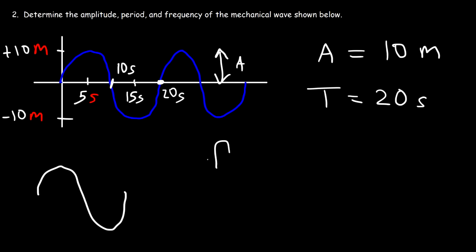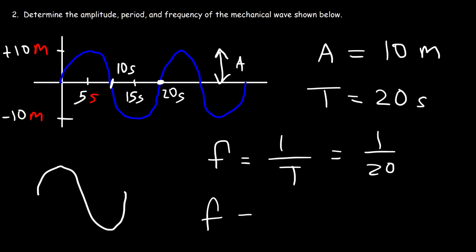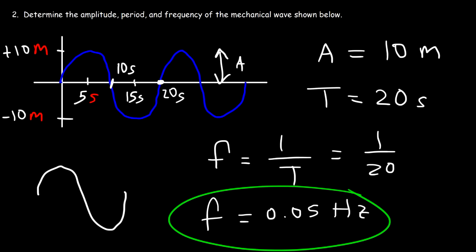The frequency is 1 divided by the period, so it's going to be 1 over 20. That gives us a frequency of 0.05 hertz. So that's the answer for this problem.